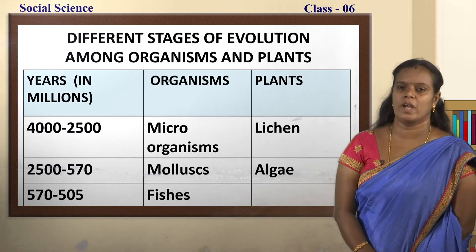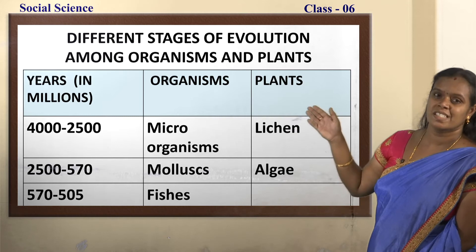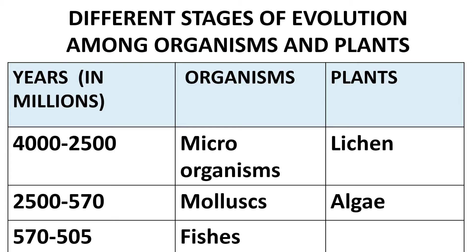Let us see the different stages of evolution among organisms and plants. You can see three columns on the screen: years in millions, organisms, and plants. From 4,000 to 2,500 million years ago, microorganisms evolved, and among plants it was lichen — a kind of fungus that grows on stems or rocks. Between 2,500 million and 500 million years ago, molluscs originated on the earth.